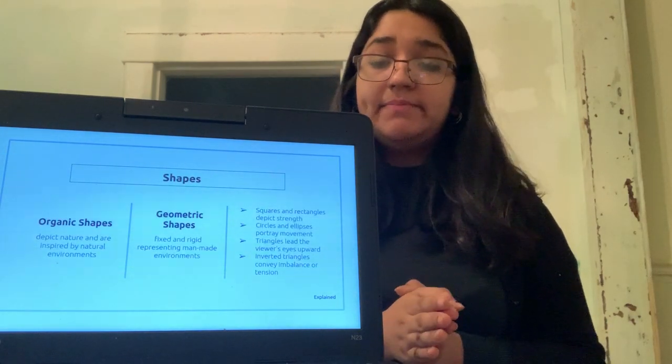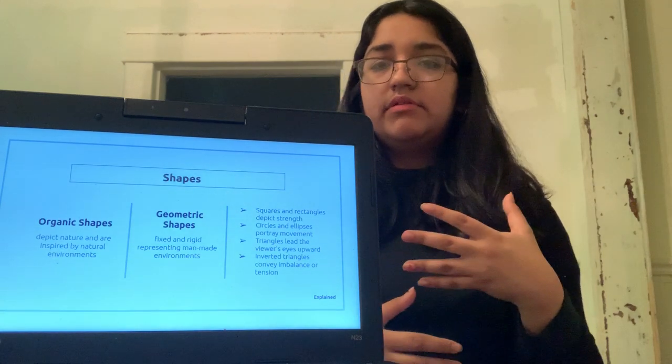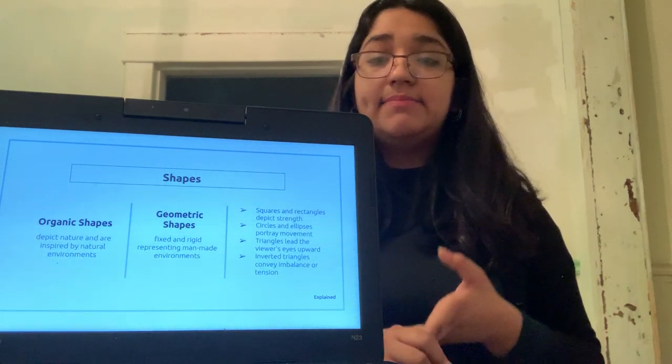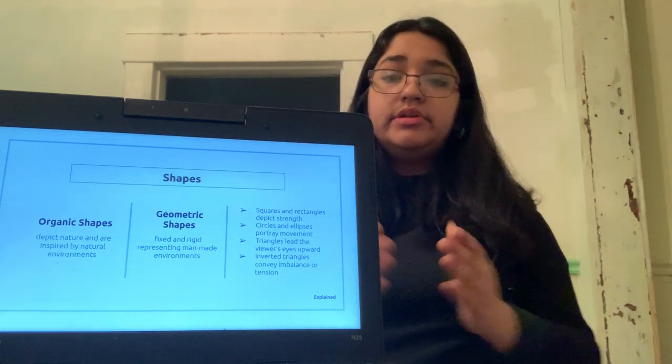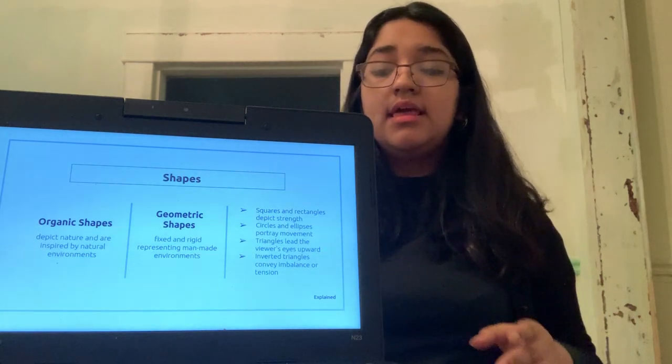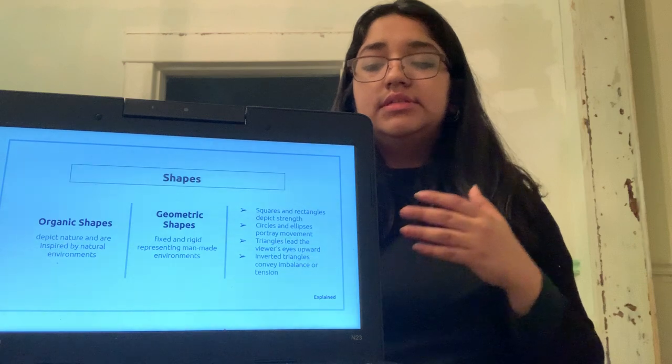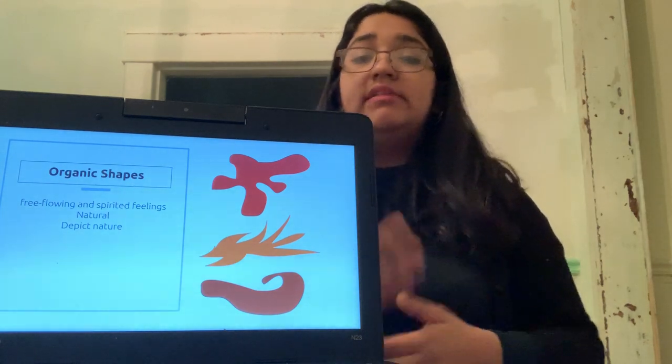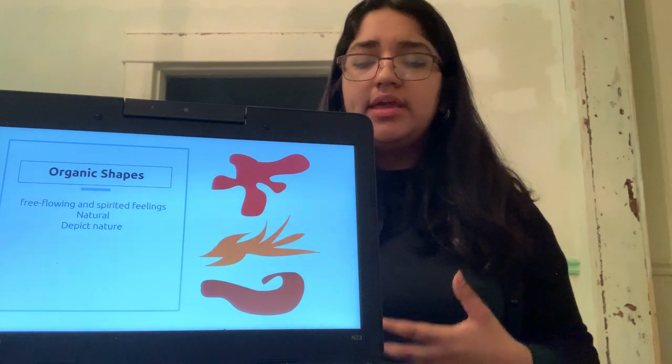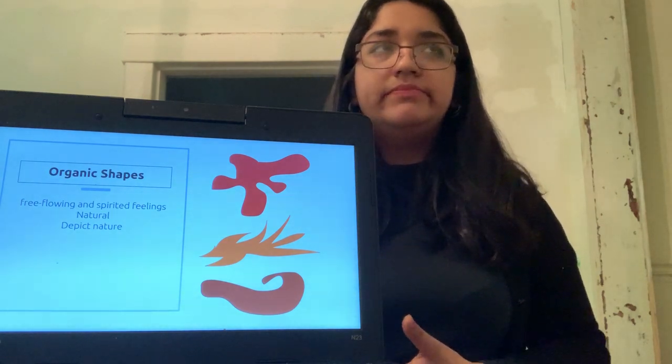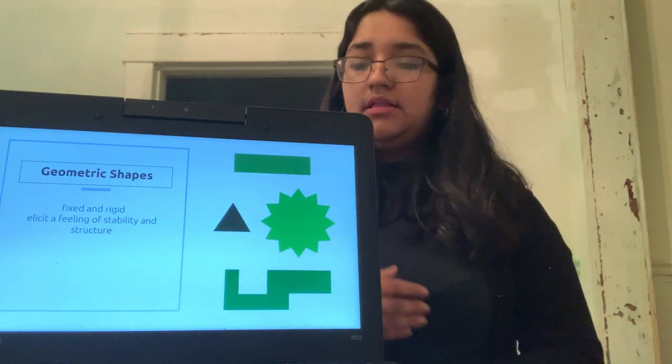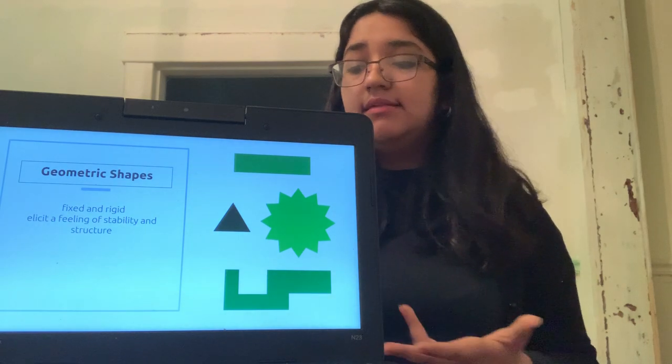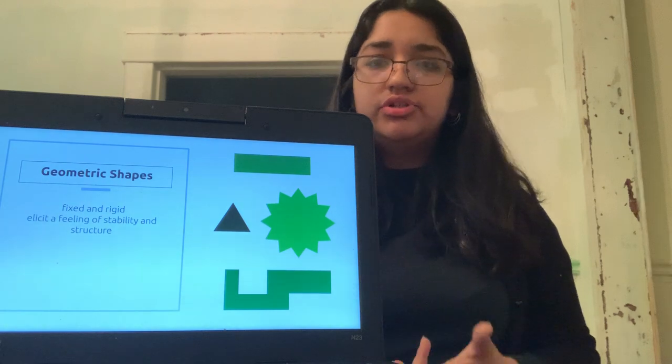There are two types of shapes, geometric and organic. Geometric shapes are like squares, rectangles. Those depict strength. Circles and ellipses depict movement and triangles lead the viewer to certain directions of their painting or art piece. And inverted triangles symbolize more imbalance and tension. Organic shapes depict nature and are inspired by natural environments. They're usually more free flowing and spirited and known to elicit those feelings. And while geometric shapes are more fixed and rigid, they represent more man-made environments like buildings and roads. They elicit feelings of structure and stability.